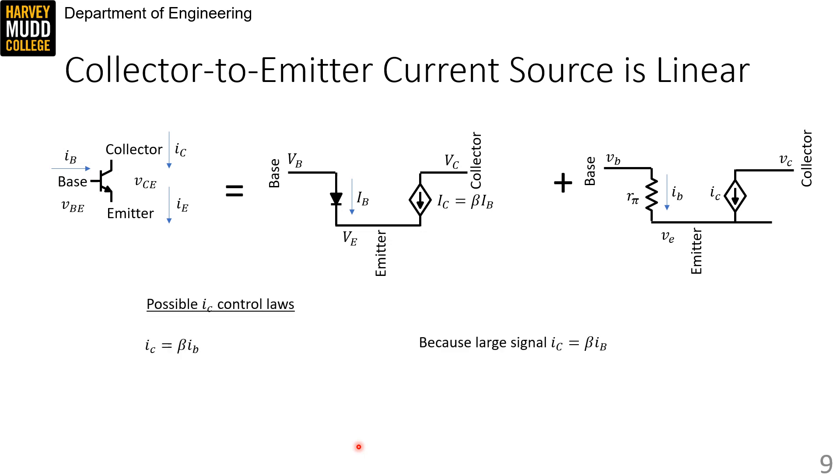We know that the dependent current source is there because large signal IC is linear in large signal IB, so the same has to be true for small signals, too. Just like we keep resistors in small signal circuits, any linear element will respond the same to both large and small signals with no approximations required.